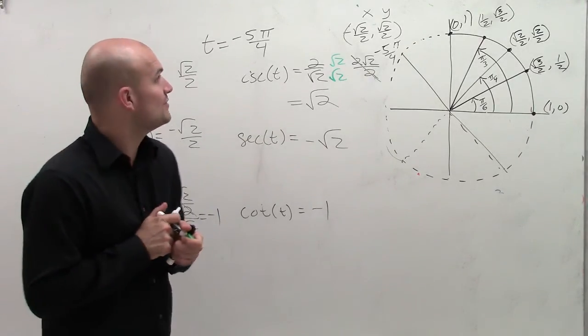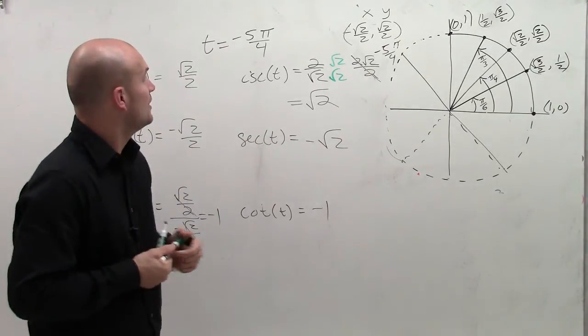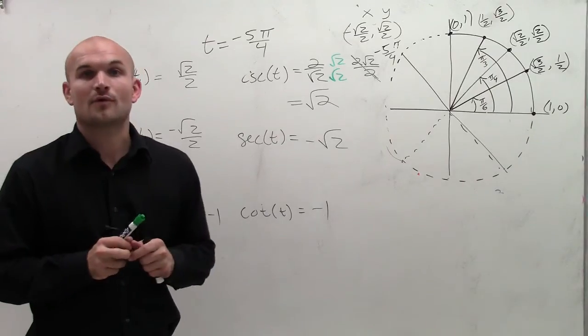So there you go, ladies and gentlemen. That's how you evaluate for the given angle at negative 5 pi over 4. Thanks.